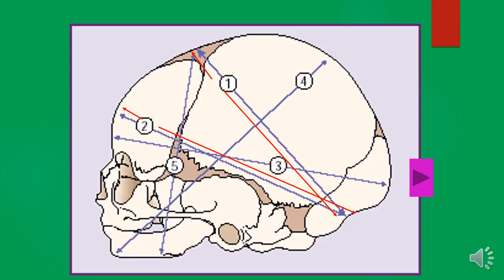The second diameter is called the suboccipital frontal. The suboccipital frontal is about 10 centimeters, measured from below the occipital protuberance to the center of the frontal suture.